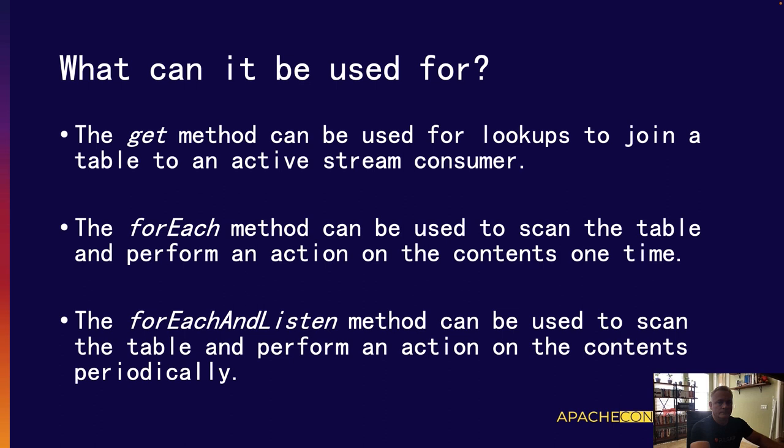The FOREACH method performs a user-defined action against each entry in the Table View. A good use case is joining two slow-moving datasets together for display — you do the scan once, exactly once, as a one-time operation. The FOREACH and LISTEN method similarly performs a user-defined action against each entry, but this action is triggered every time the Table View is updated. A good use case is joining a slow-changing dataset, such as a stock portfolio, with a fast-moving dataset such as stock quotes — the recalculation only happens when the values in that Table View change.